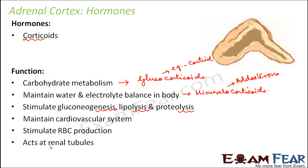The mineralocorticoid aldosterone acts at the renal tubules in the nephron of the kidneys. In the excretory system, the renal tubule helps in reabsorption of water and ions. Aldosterone stimulates reabsorption of sodium ions and water, and also excretion of phosphate ions at the renal tubules. This is how it plays an important role in the reabsorption process occurring at the renal tubules.